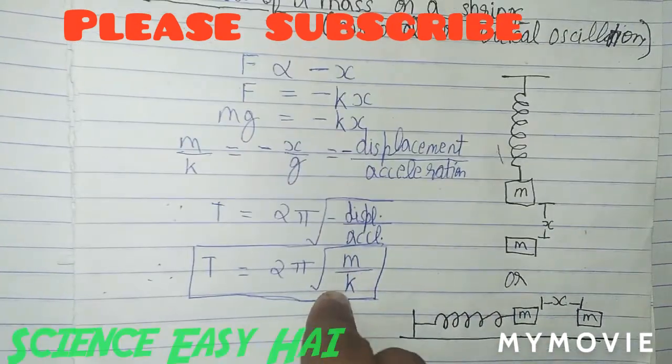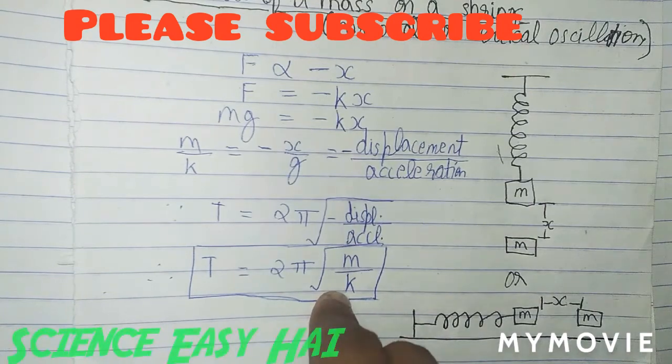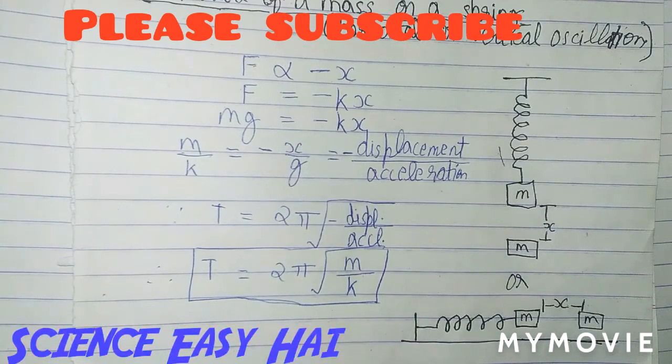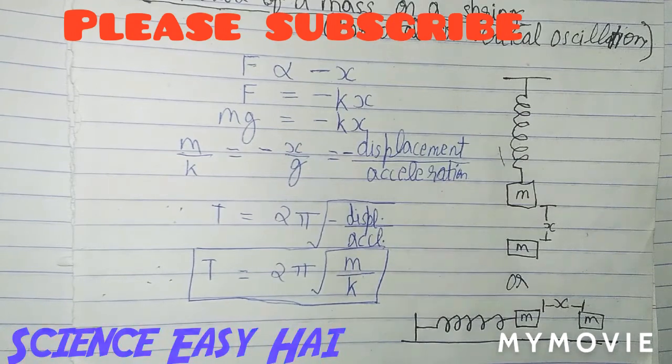So this is the formula for time period of a mass on a spring, either executing horizontal oscillation or executing vertical oscillation. After watching this video, if you have not watched our previous video of simple harmonic motion, go to our description box where you get the link.